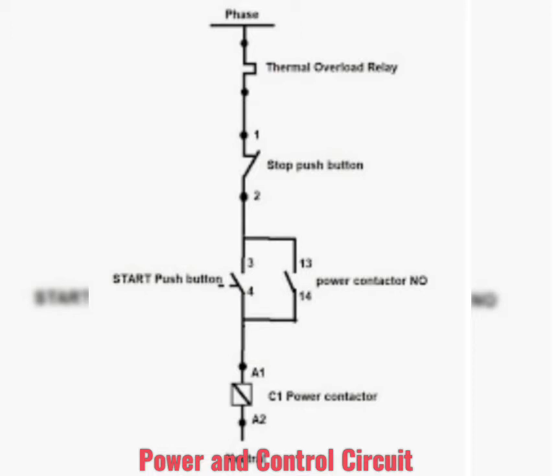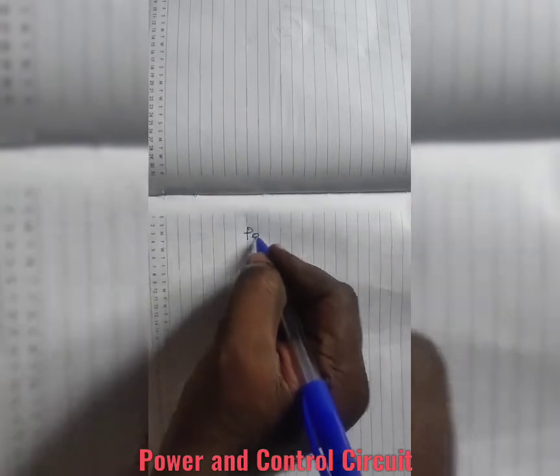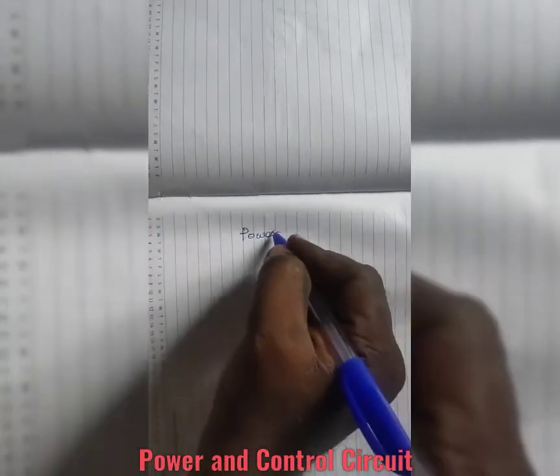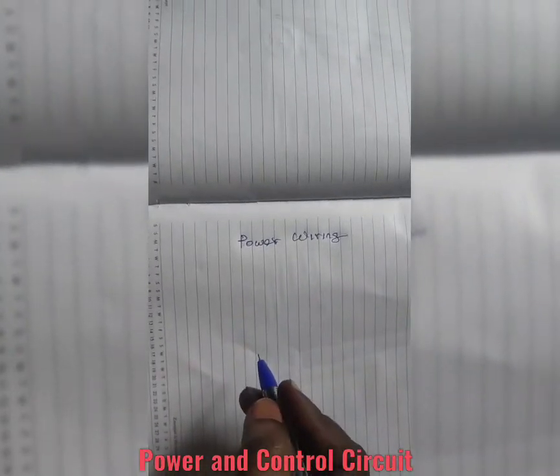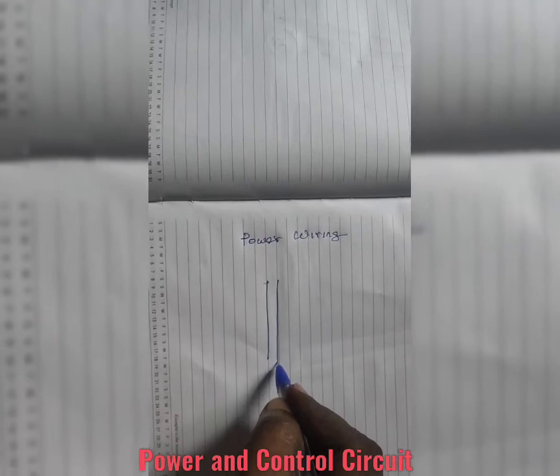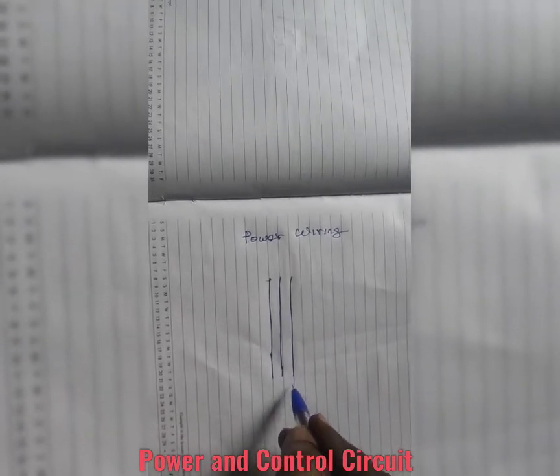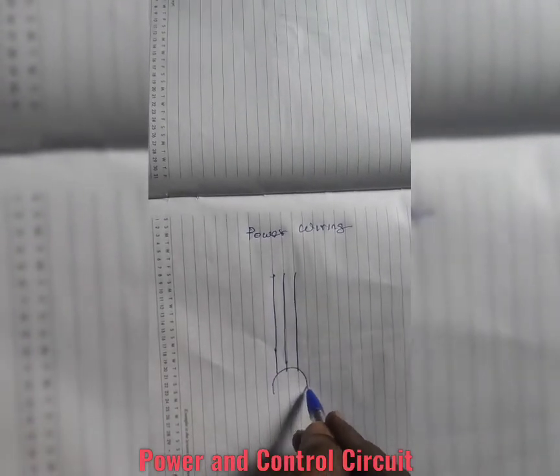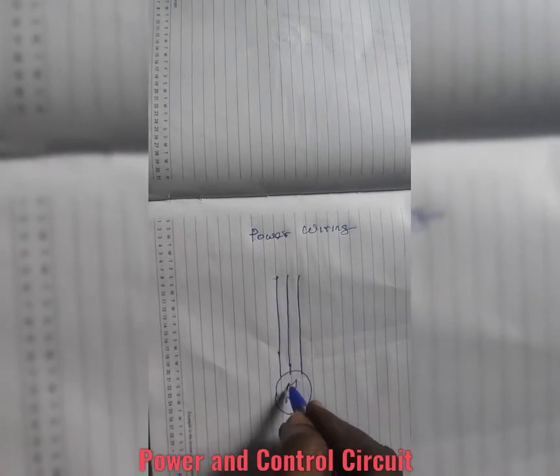For example, if we have one motor, we can connect three phase supply to the motor directly. This three phase supply is called power circuit. Here I am giving three phase supply to the motor directly.